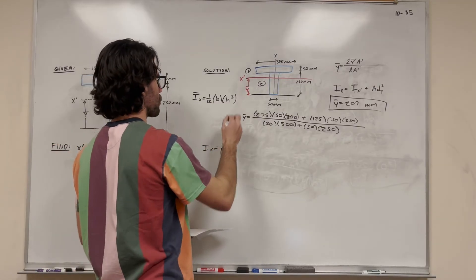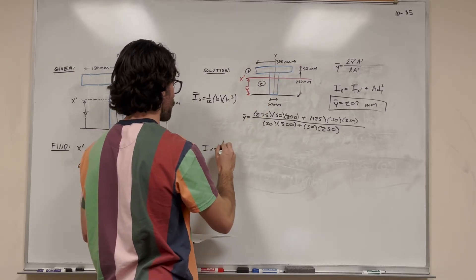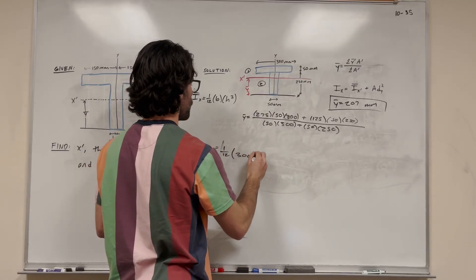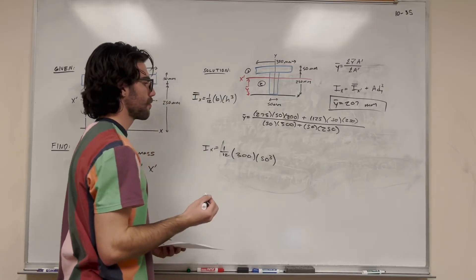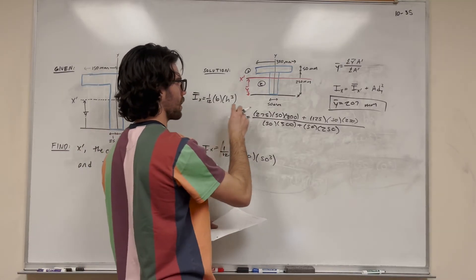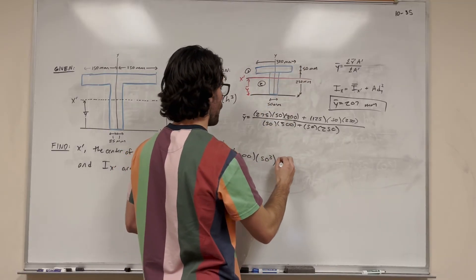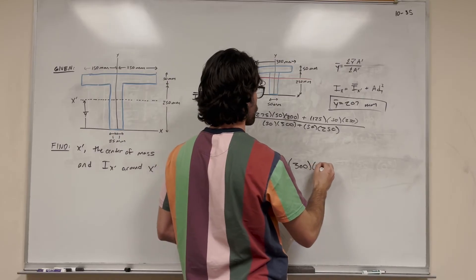So we're going to just go ahead and solve it. So we're doing the first shape here. So it's 1/12, I forgot about the 1/12. Its base is 300 millimeters, and its height is 50 millimeters. So we're going to do 50 cubed. Nice. And then now we're going to add the second part of the central axis theorem. So we're still on shape number 1. So we're going to add it to its area. Its area is just base times height, 300 times 50.